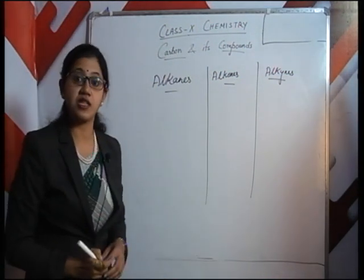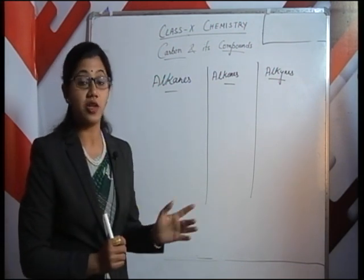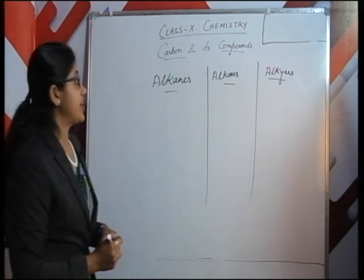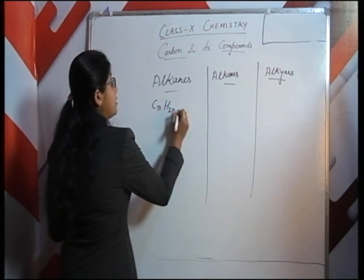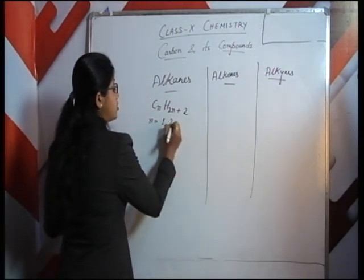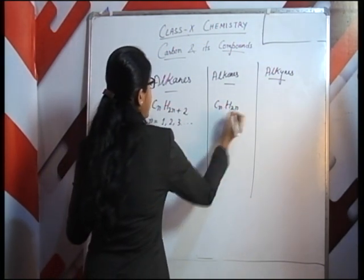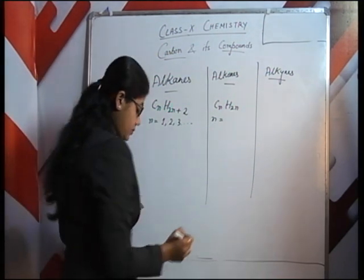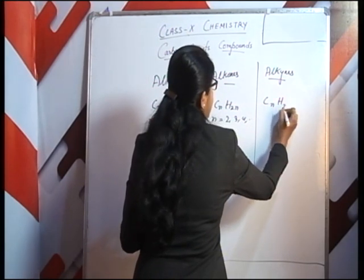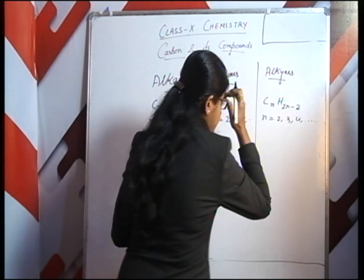Alkanes are the saturated hydrocarbons and all members of the alkane family can be represented by one general formula. Alkenes and alkynes can also each be represented by one general formula. For alkanes, the general formula is CnH2n+2, where n starts with 1, 2, 3 and goes on. For alkenes the general formula is CnH2n, where n begins with 2, 3, 4 and goes on. For alkynes the general formula is CnH2n−2, and n again begins from 2, 3, 4 and goes on.